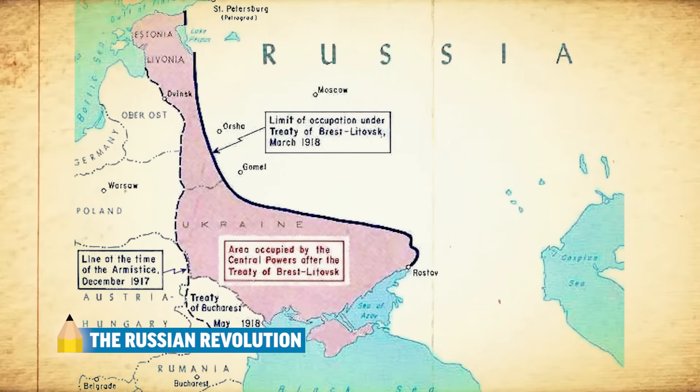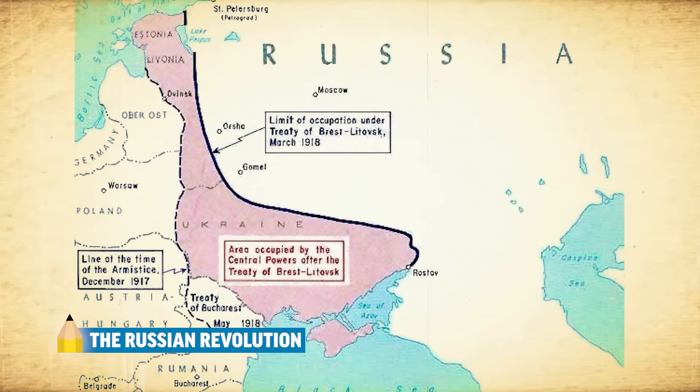World War I leads to such death and destruction that the Central Powers and Allied Powers come together and agree to a ceasefire — an armistice — in 1918. The military stalemate in World War I, coupled with Tsar Nicholas II's bad political decisions, exacerbate problems in Russia. Russia officially leaves World War I with the Treaty of Brest-Litovsk.